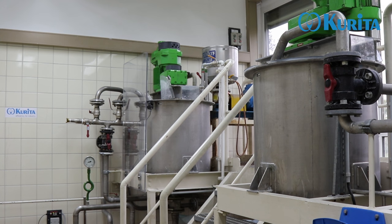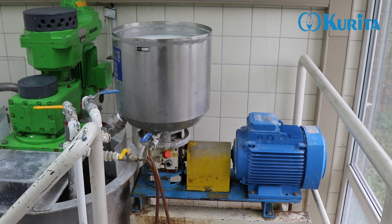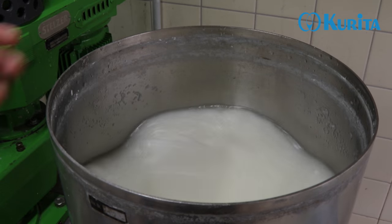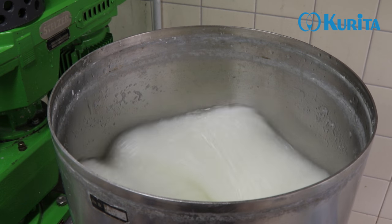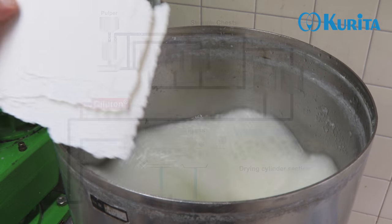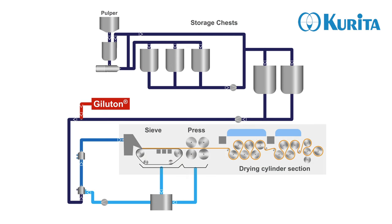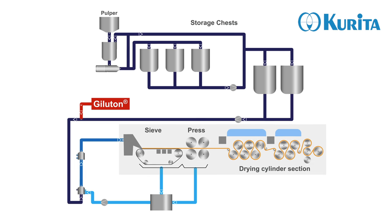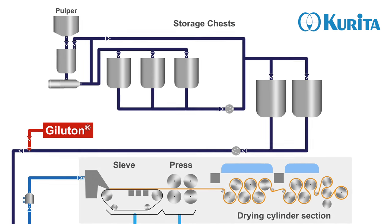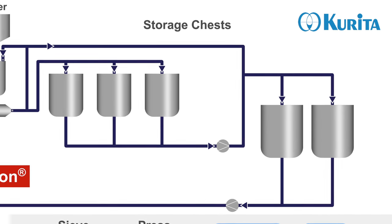First, cellulose fibers have to be smoothly dispersed in water, allowing the wet strength agent to reach every single fiber surface. Paper production is a non-stop process and storage chests are needed to keep the production continuously running.